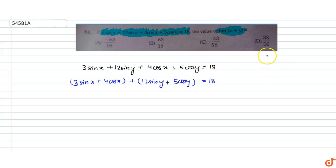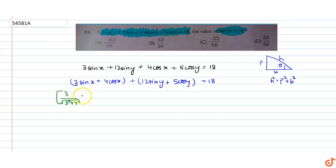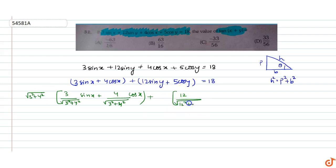अब हमें पता है कि अगर कोई angle theta है तो perpendicular, base, hypotenuse में hypotenuse² = perpendicular² + base². तो इसको trigonometric identity में convert करने के लिए, हम लिख सकते हैं: 3/√(3²+4²) · sinx + 4/√(3²+4²) · cosx. Plus 12/√(12²+5²) · siny + 5/√(12²+5²) · cosy = 18. जब हमने divide किया तो multiply भी करना होगा।